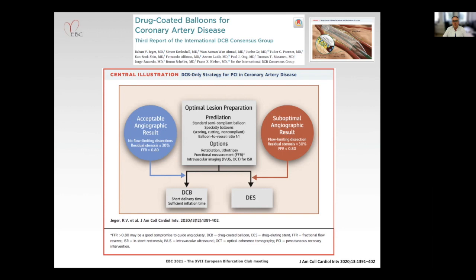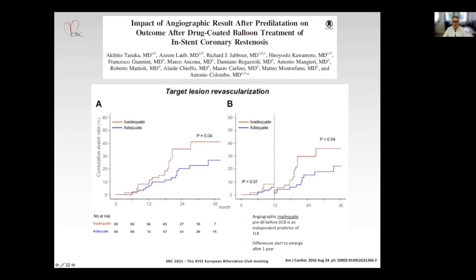Type A and B dissections are fine because they are not flow-limiting. A residual stenosis of less than 30%. And if you want to include functional measurements, the recommendation is an FFR rate of at least 0.8. It has been shown in clinical data that this recommendation of the acceptable angiographic result is very suitable to predict the long-term outcome in terms of target lesion revascularization, as in this work from the Colombo group from Milano.